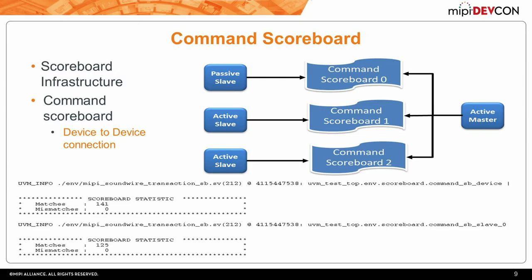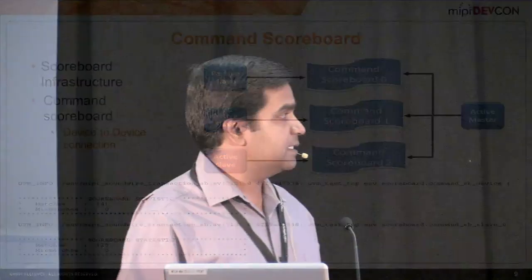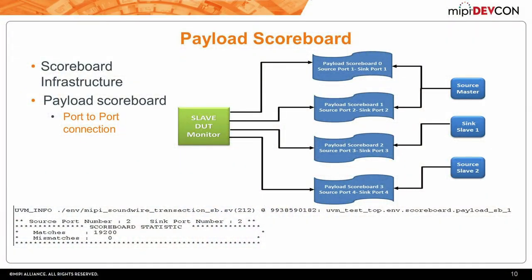Here is how a command scoreboard looks. In this case there is one passive slave and two active slaves connected to a master, so we have three different scoreboards displaying statistics like comparisons, mismatches, or matches—in this case all are matching. For the payload scoreboard, the slave design had four ports: two ports connected to the master, one port connected to slave one, and another connected to slave two. Based on this topology, we have four different scoreboards displaying statistics for all the relevant scoreboards.